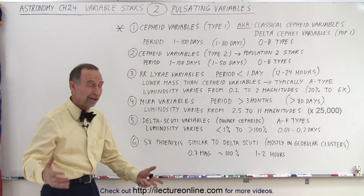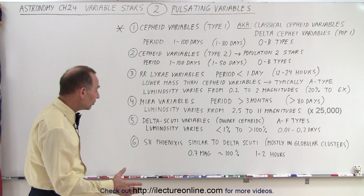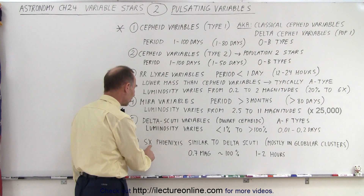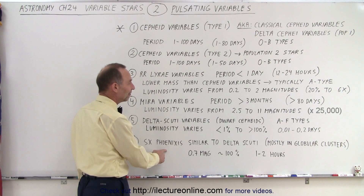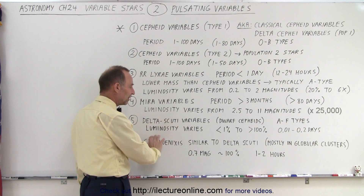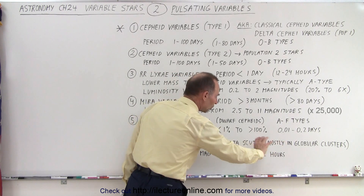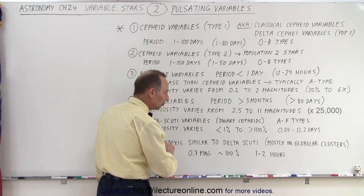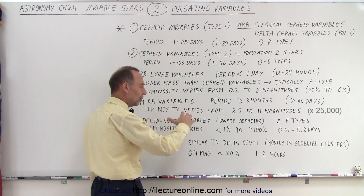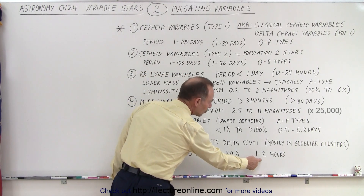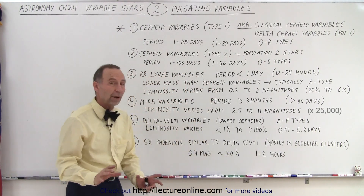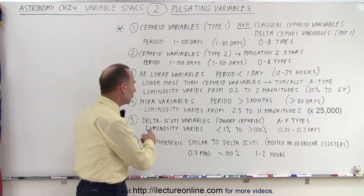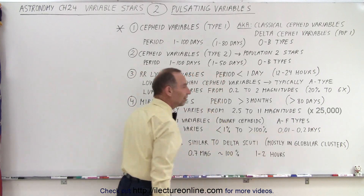Another type very similar to the Delta Scutis is the SX Phoenicis variables. They're similar but mostly found in globular clusters. Their magnitude changes about twofold — doubling in brightness then returning to normal — and they do that in very short periods of about 1 to 2 hours. They're more clustered in their periodicity, whereas there's a little more variability in the Delta Scuti variables, perhaps simply because we haven't found and classified enough of them yet.